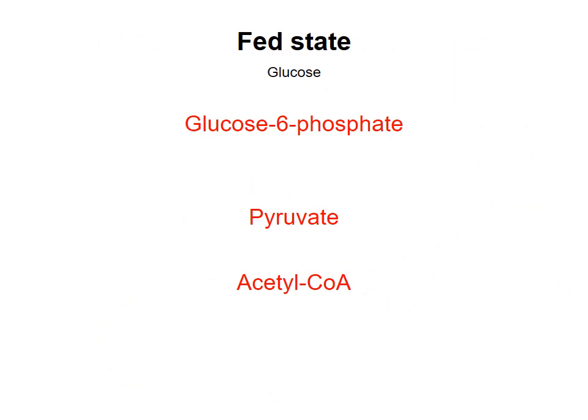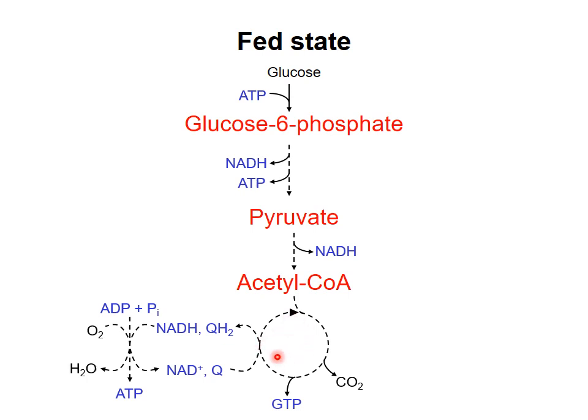In the normal fed state, carbohydrates will be ingested along with a meal. This will increase the concentration of glucose in the blood, which will induce the pancreas to release insulin. Tissues will take up glucose from the blood through glucose transporters and phosphorylate it to glucose 6-phosphate, thereby trapping the glucose inside the cell. The G6P can be used for multiple purposes. Insulin has the effect of operating glycolysis, so some G6P will be converted to pyruvate, which will be further oxidized in the citric acid cycle. Oxidative phosphorylation will also be active to produce ATP for the cell.